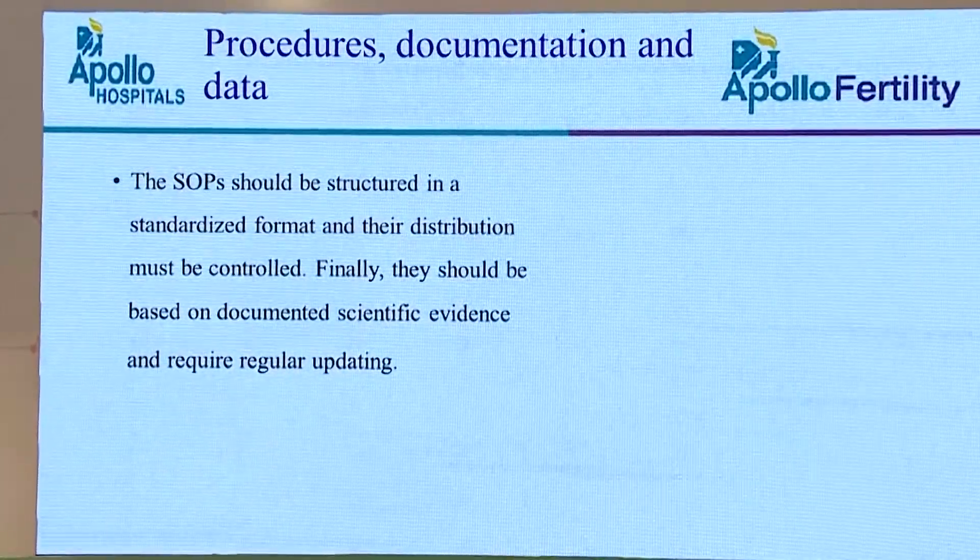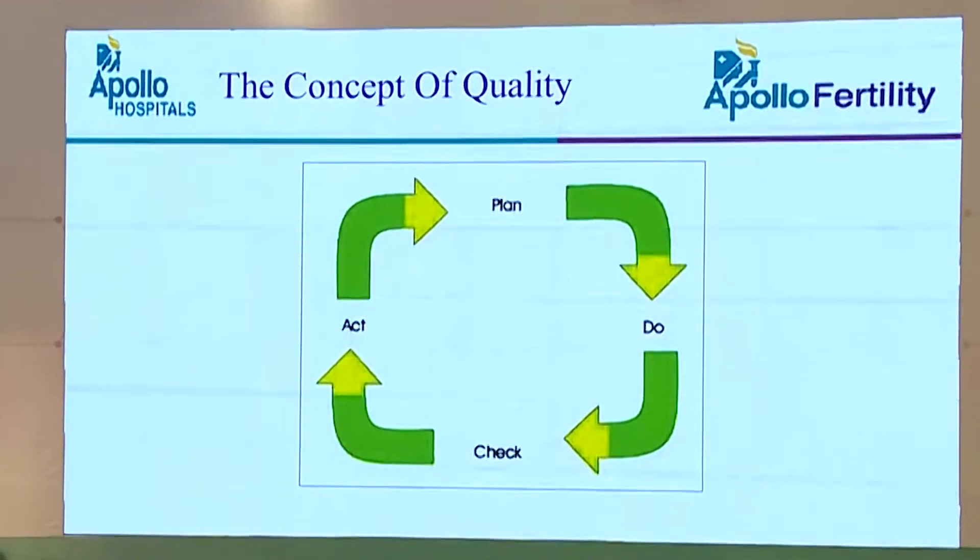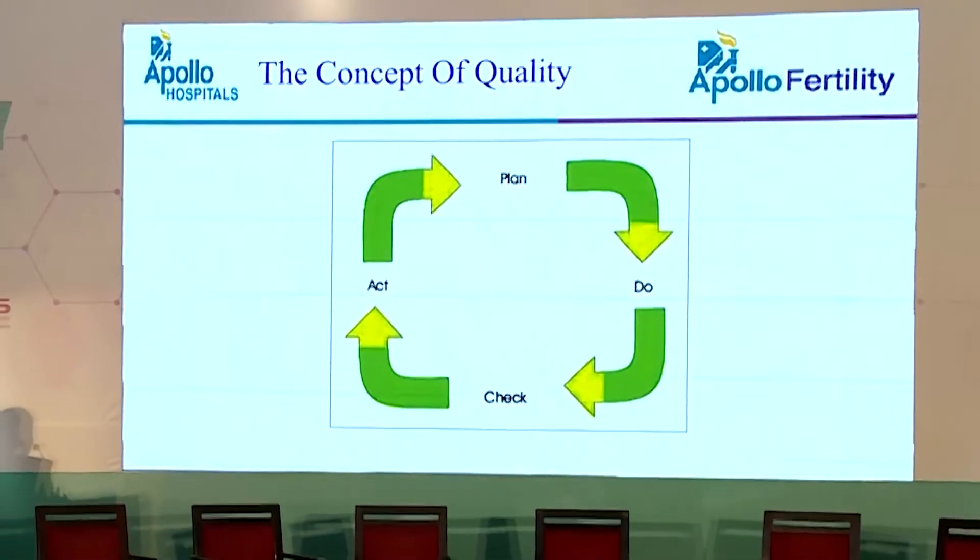When it comes to procedures, SOPs, documentation, and data creation are very important. SOPs should be structured in a standardized format and their distribution must be controlled. They should be based on documented scientific evidence and require regular updating. All clinics should keep up with new research to help patients better. The concept of quality is: plan for each patient, execute the plan, check whether your procedures were correct, and if there were any issues, act upon them so that your center improves day by day.